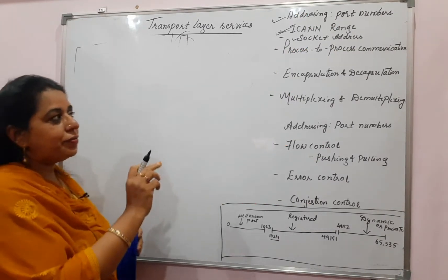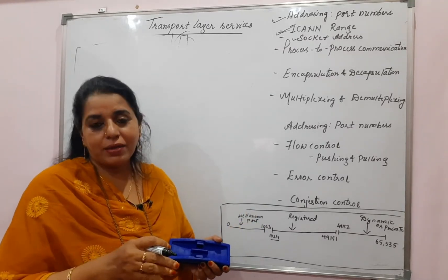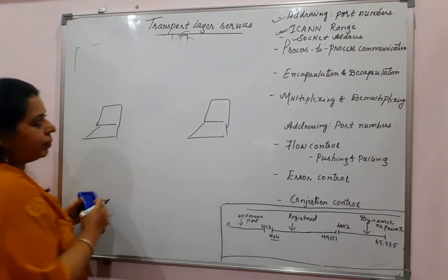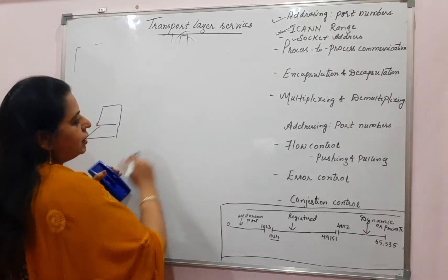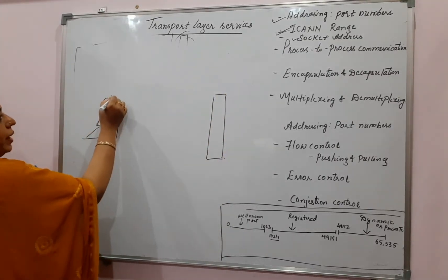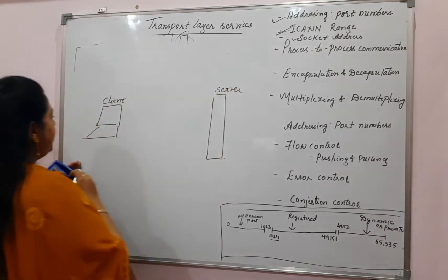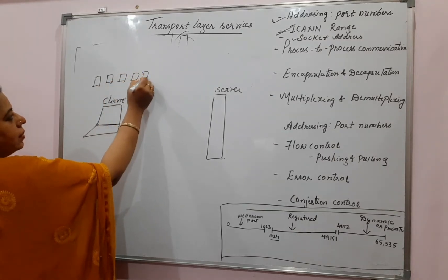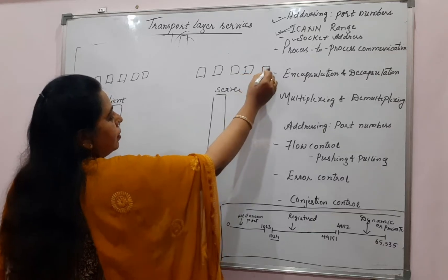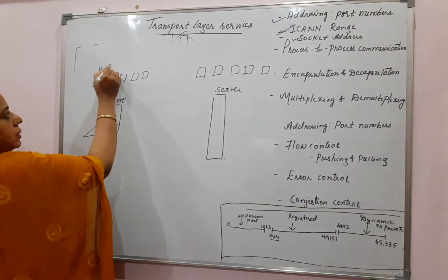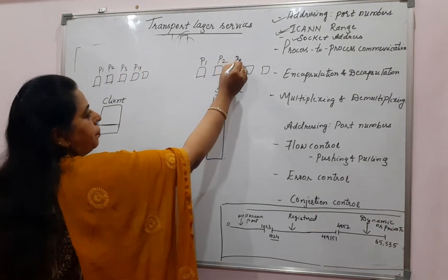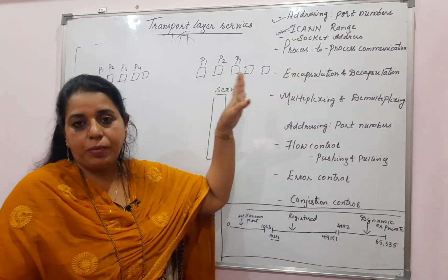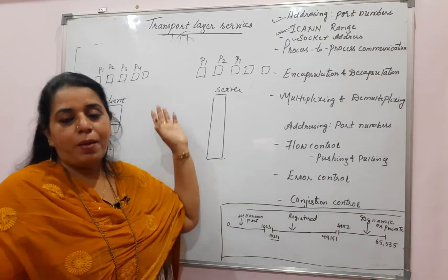The first one is process-to-process communication. You will agree now because the very first session gave a complete introduction showing how a process at the sender side will communicate with the process at the receiver side. That is why we say one of the services provided is process-to-process communication. To show the functioning of the transport layer, I will be showing the destination as a server and the sender as a host — this is a client and this is a server.